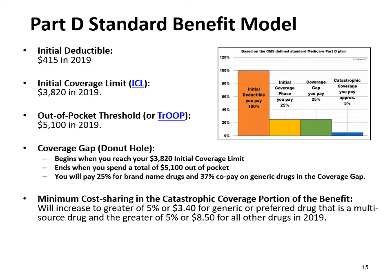Private insurance companies offering Part D plans must follow the minimum requirements of the CMS Part D standard benefit model, though they can provide better benefits. Medicare does not administer Part D. You must have Part A and/or Part B to be eligible for Part D. You must enroll in a Part D prescription drug plan or, when you do enroll, pay a 1% penalty for each month you did not have Part D. For 2019, the annual Part D deductible is $415, which may be waived by the insurance company.